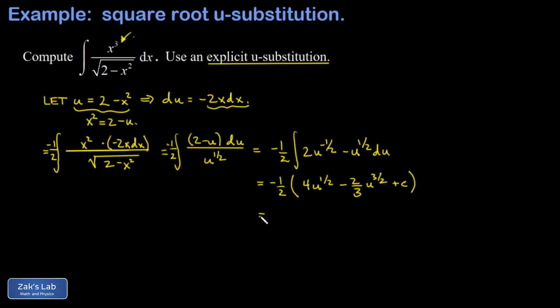And then to finish the problem, I need to sub in the definition of u in terms of x. And I'll go ahead and clean things up a little. I'm going to distribute the negative 1 half to both of these terms. For the first term, negative 1 half of 4, that's negative 2u to the 1 half. The second term, negative 1 half times 2 thirds, that's positive 1 third u to the 3 halves.